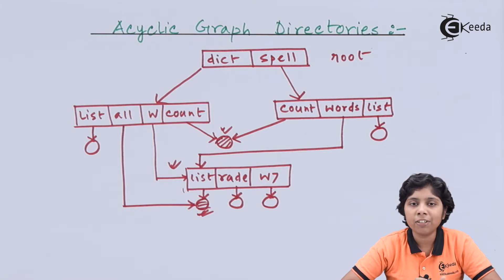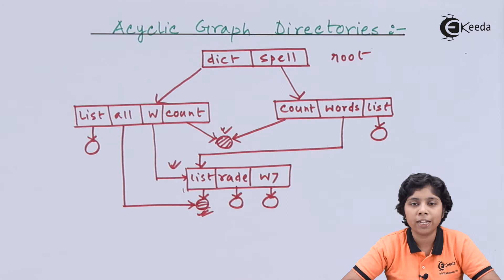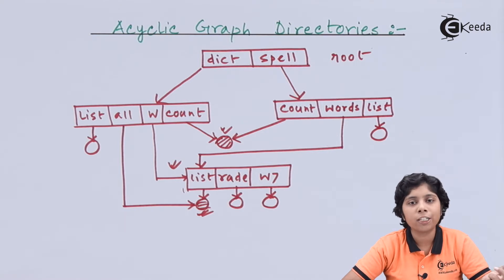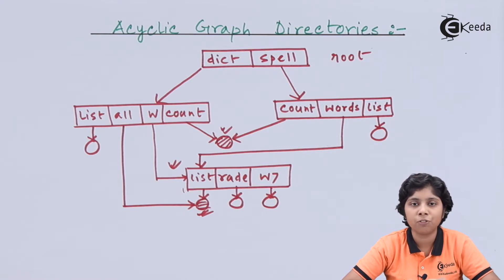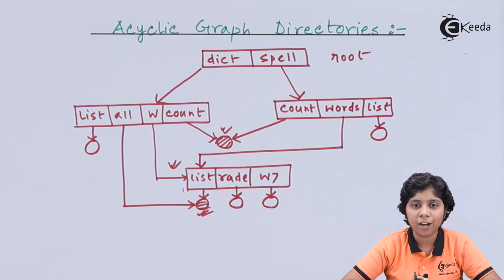Another approach used by some operating systems is to copy the original file into the directory entry of each user or programmer that uses it as a shared file or subdirectory. Every time a directory uses a file, an entire copy of that file is placed in the directory entry. However, since each copy is modified independently, data consistency must be handled very carefully when using this copying approach as the sharing method.